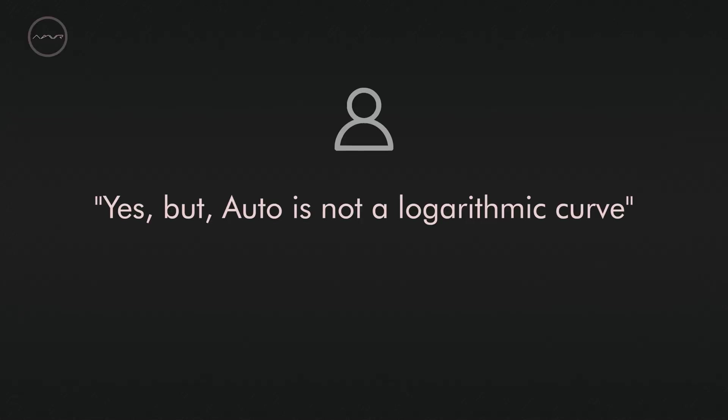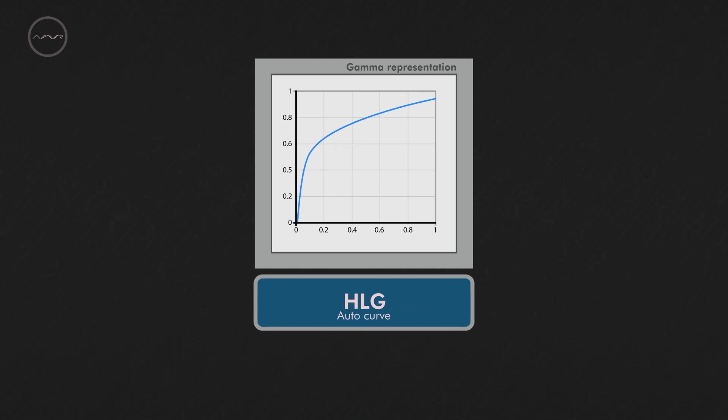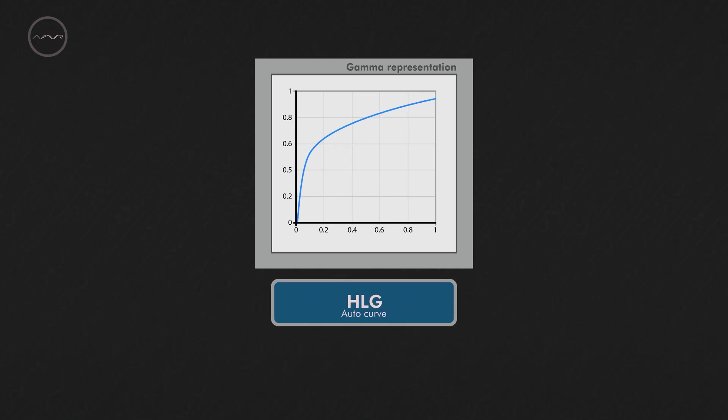Yeah, but Auto is not a logarithmic curve. We know — we knew it would get to this point. And the secret is to replace the desired curve into the AutoSlot. Now is when it comes to AMVR magic.